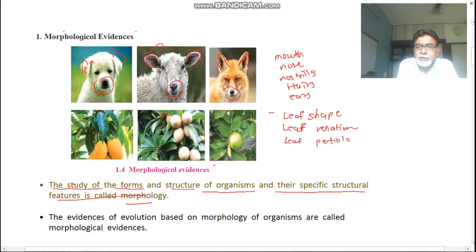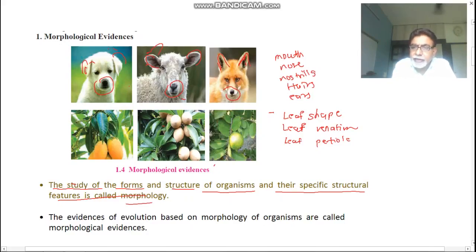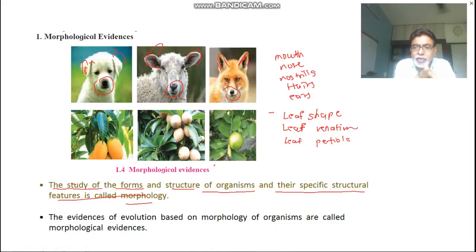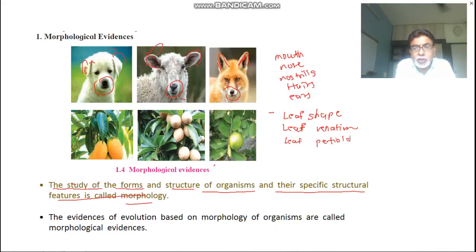Similarly for plants: leaf shape, leaf venation, and petals are similar even though they are different plants. This morphology proves that despite being different species today, they definitely had a common ancestor — they originated from a common ancestor. This is the morphological evidence.